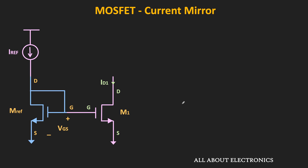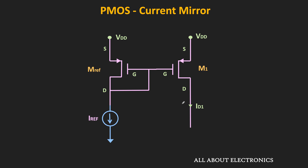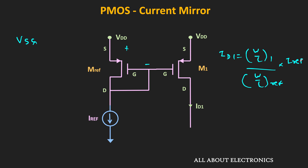So far we have seen the current mirror circuit using the NMOS transistor. Similarly, let us see the PMOS current mirror, and for the time being let us neglect the effect of channel length modulation. Here, the reference current is connected at the drain terminal of the reference transistor, while the gate and drain terminals of the reference transistor are connected together — so it is a diode-connected transistor. The source of both transistors is connected to VDD, meaning the voltage VSG for both transistors is equal. The drain current ID1 can be given as the W/L ratio of the first transistor divided by the W/L ratio of the reference transistor, times I_reference. The only thing we need to ensure is that M1 operates in the saturation region, meaning VSD1 should be greater than or equal to VSG minus VT.